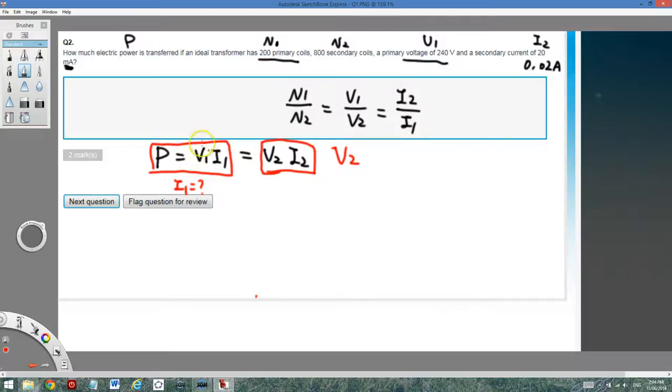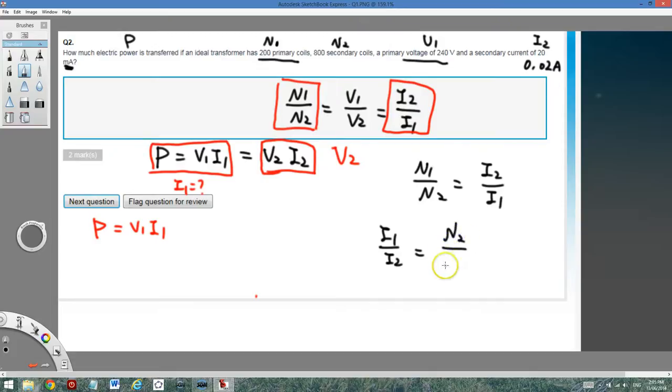Now for me, I just use P equals to V1 I1. So I need to find the I1. V1 is 240. I need to find the I1. So let's use the equation. So we know the ratio of the coil and I need to find the I1. So let me just make these two equal. So N1 on N2 equals to I2 on I1. And I need to find I1. I swap this around. I1 on I2 equals to N2 on N1. So I have 0.02 equals to N2, which is 800 divided by 200. So I1 will be 0.02 times 4, which is 0.08 amps.